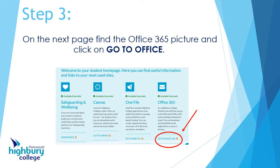Now you'll get a page with lots and lots of information. All you need to do is look for the section that says 'Office 365', just like it has in the picture. At the bottom you've got 'Go to Office', so click on that.